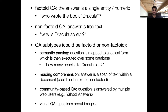Within those categories there are many sub-types. Semantic parsing QA involves a database like a SQL database of facts or triples, where a question gets converted into a SQL statement that's executed over the database and an answer is returned. For example, 'How many people did Dracula bite?' might be converted into a SQL query run over a database with that information.